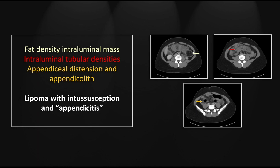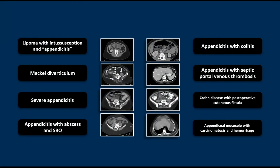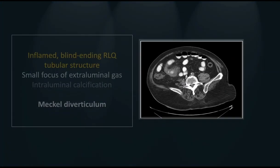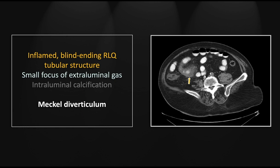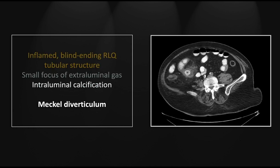Our next case is a Meckel diverticulum — the classic fooler. It's in much the same location as the appendix, but it comes off the terminal ileum. There is a blind-ending pouch demonstrating significant inflammatory stranding, and you can see a small focus of gas consistent with perforation. On the next image down, you can see a stone within that diverticulum, which is a common finding.